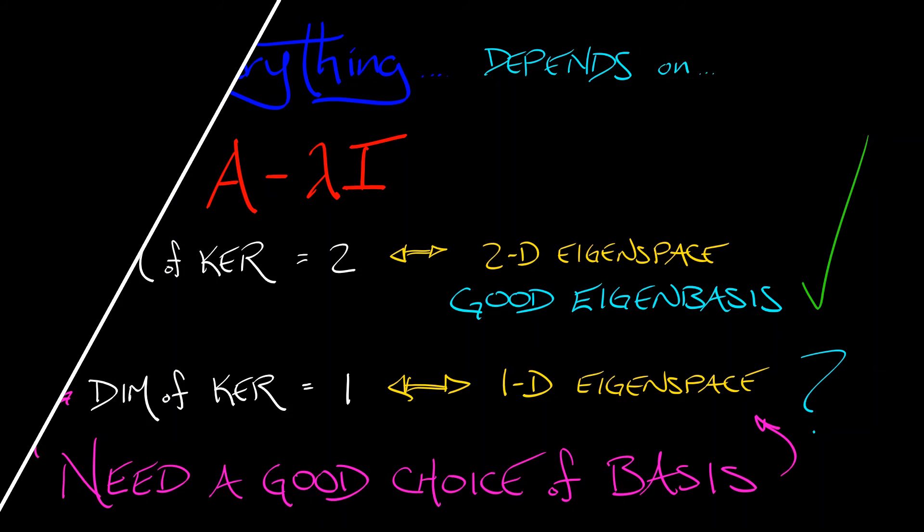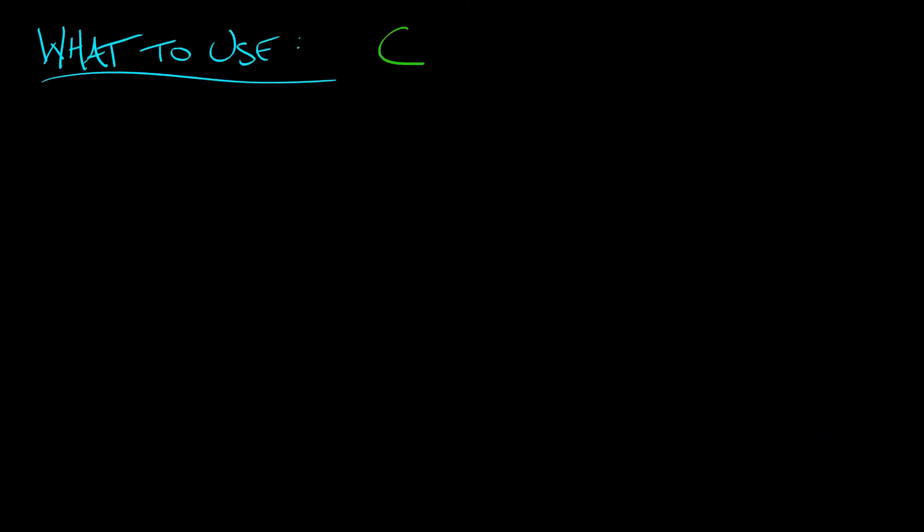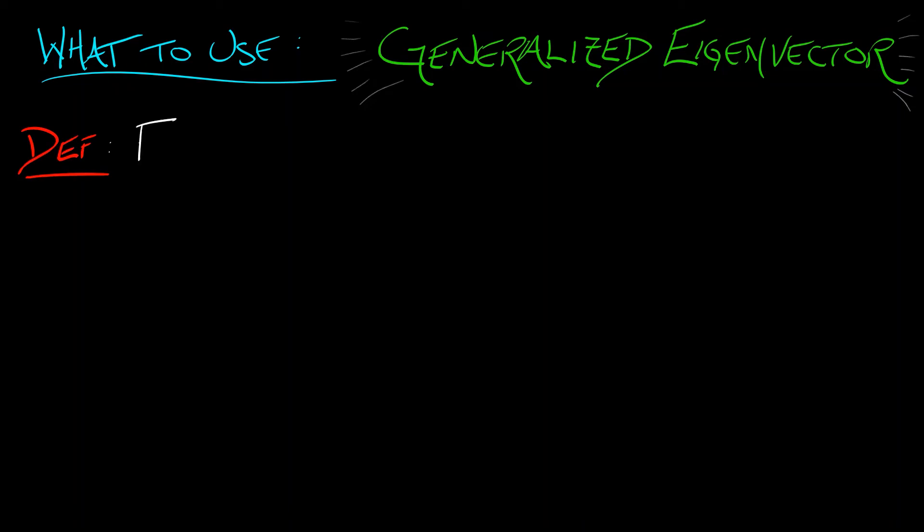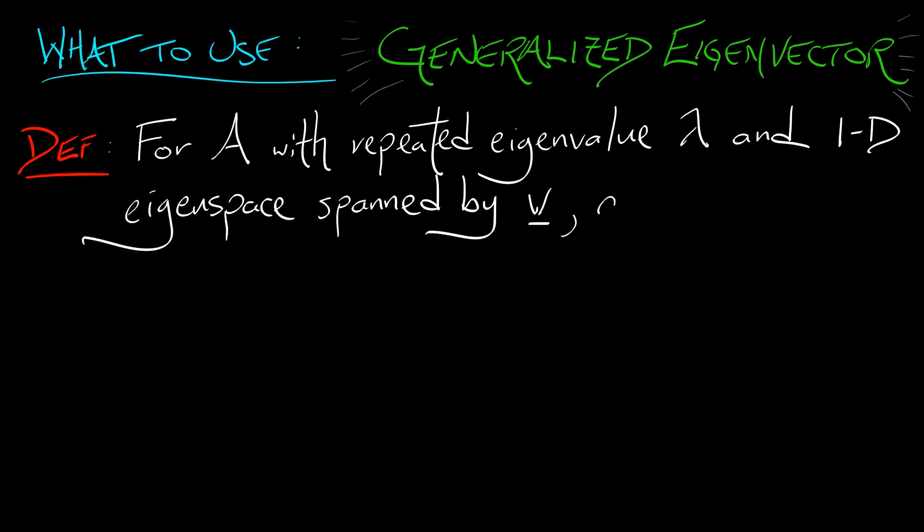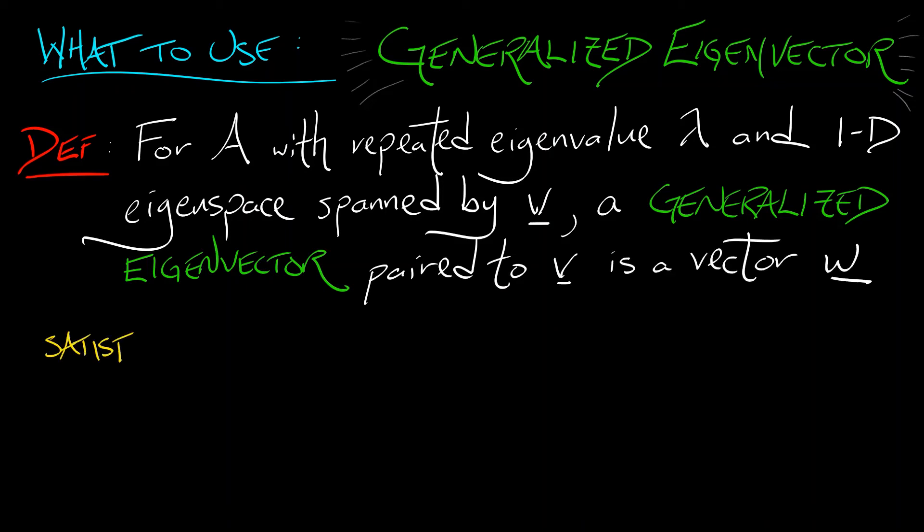So what are we going to do? Well, what we're going to do is build a basis using something called a generalized eigenvector. Here is a definition that will get us by for the moment: For a 2×2 matrix A with repeated eigenvalue λ, one-dimensional eigenspace spanned by an eigenvector V, then a generalized eigenvector that is paired to V is a vector W that satisfies the following equation: I take A - λI, I hit W with it. What do I get? Do I get zero? No, because then it would be an eigenvector. This is a generalized eigenvector. (A - λI) applied to W gives you V.